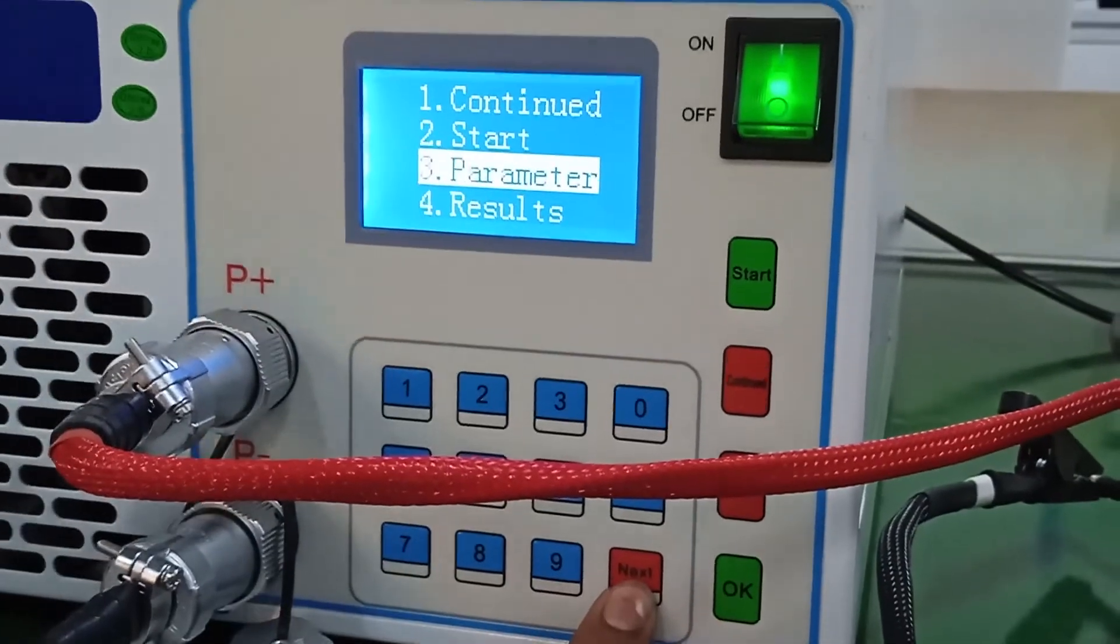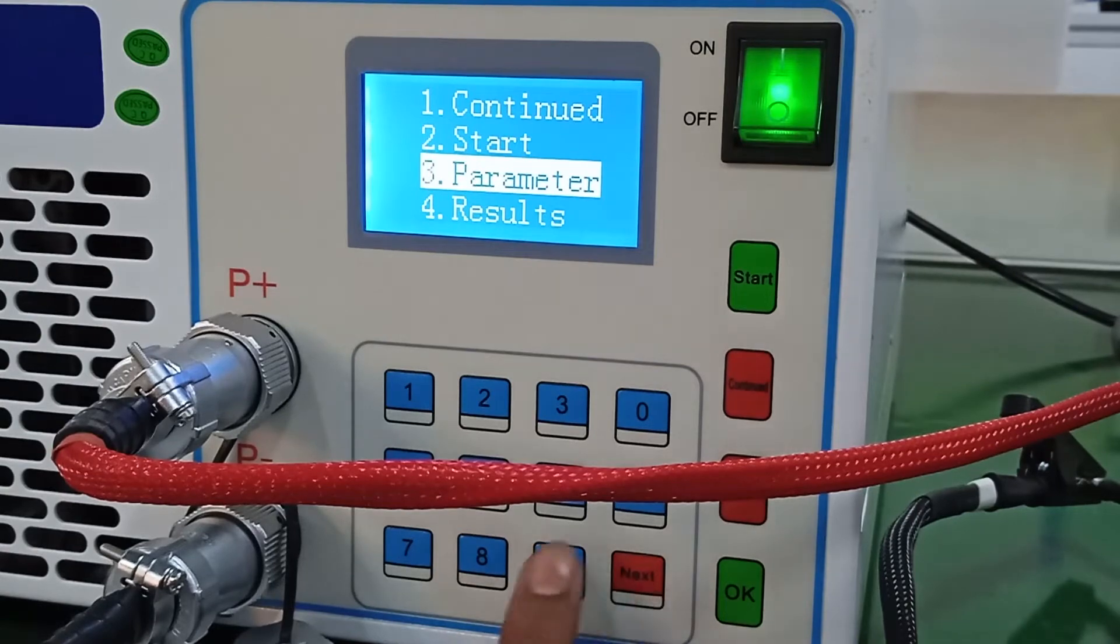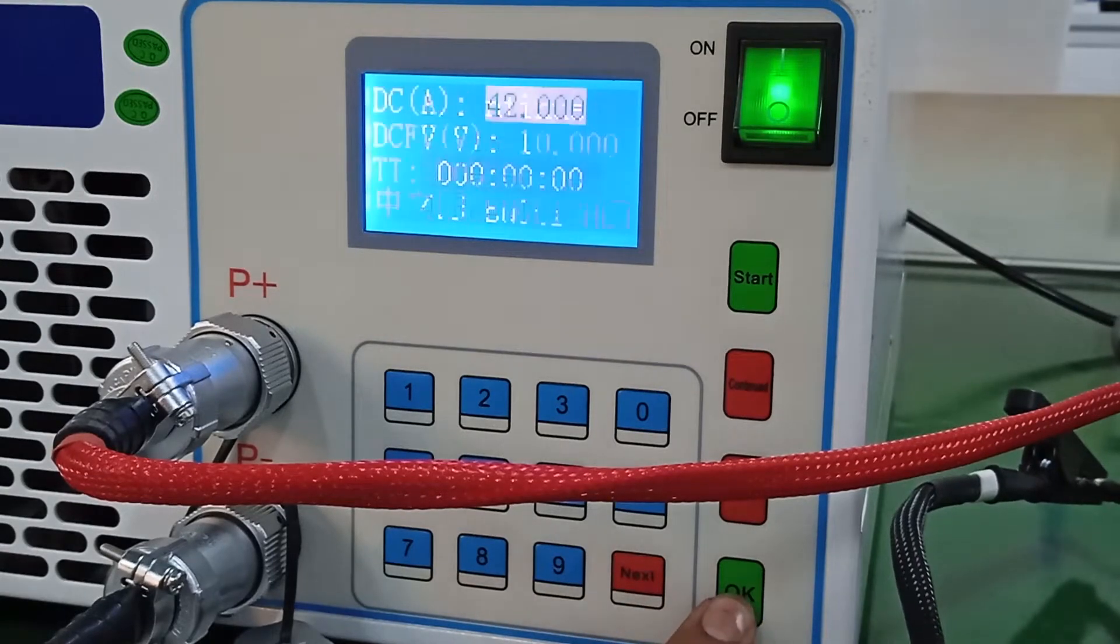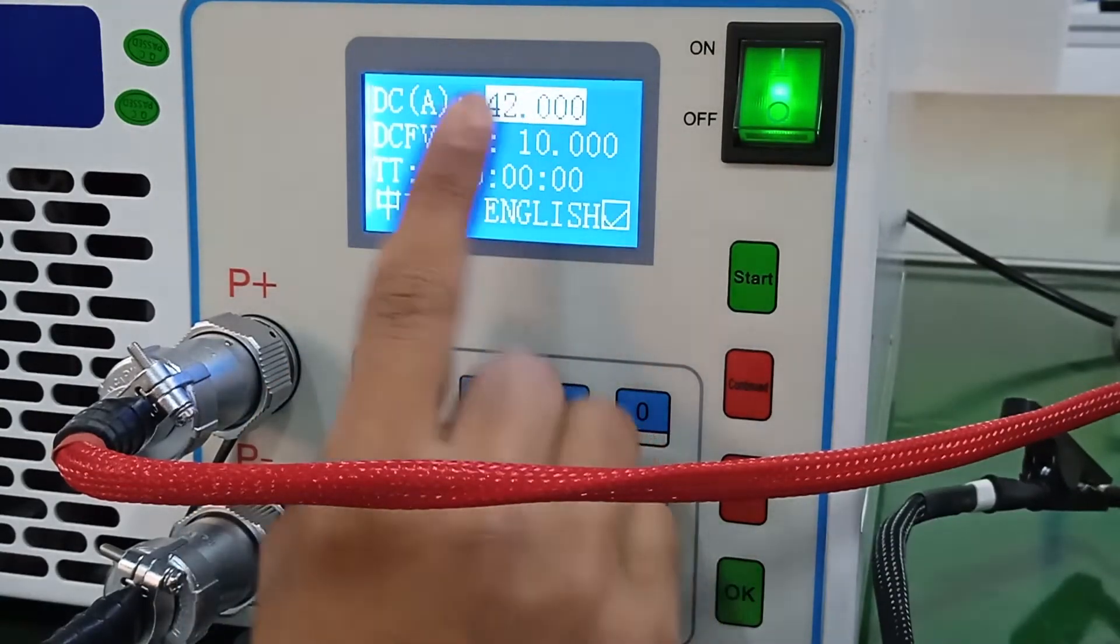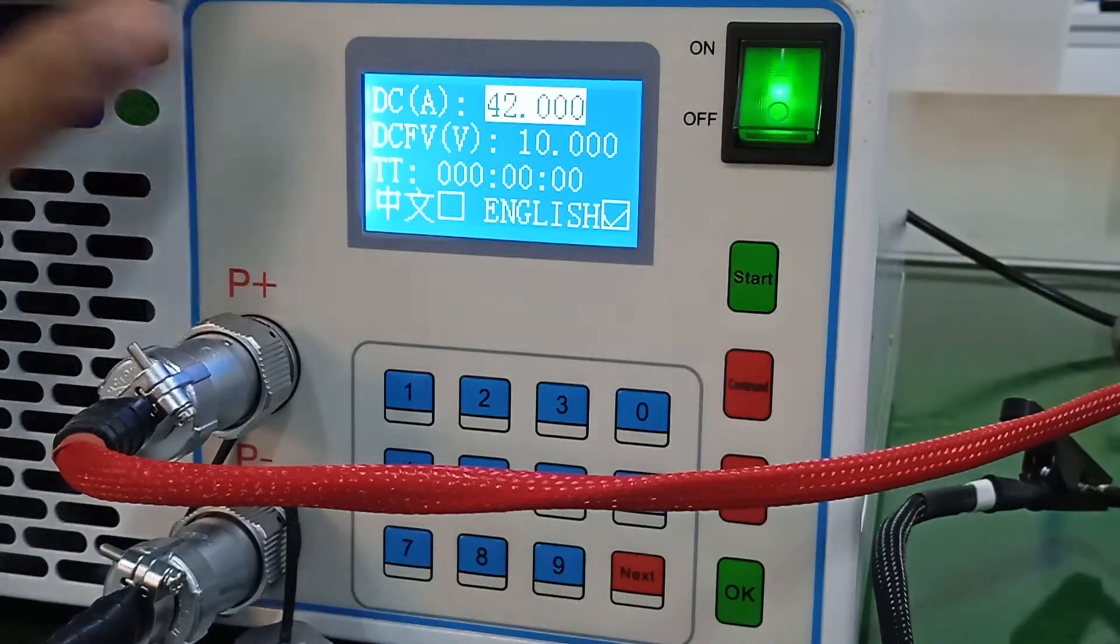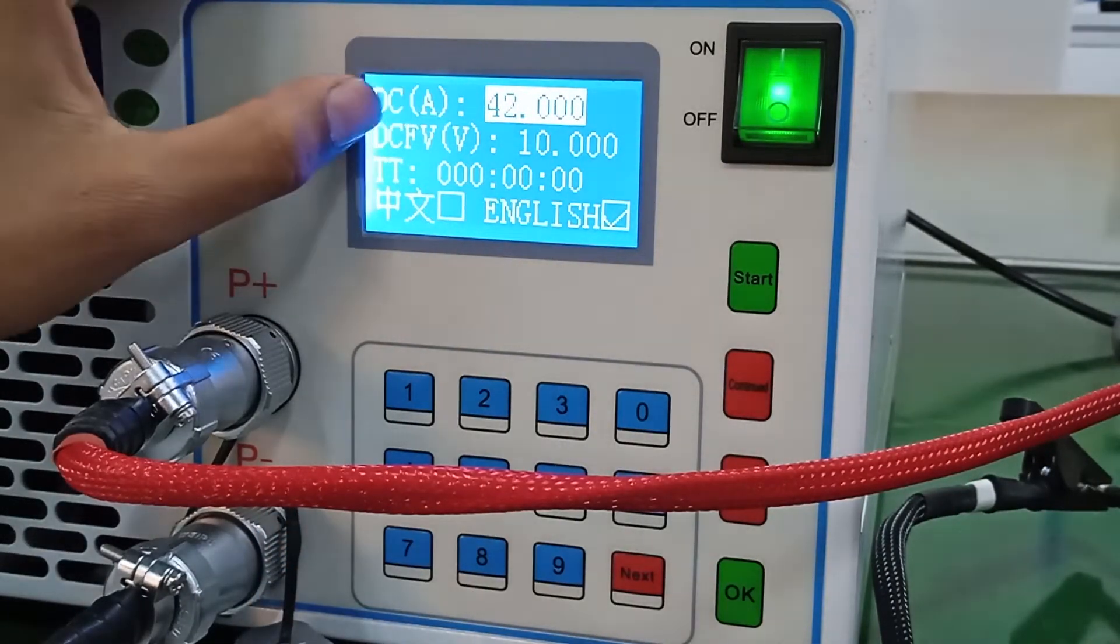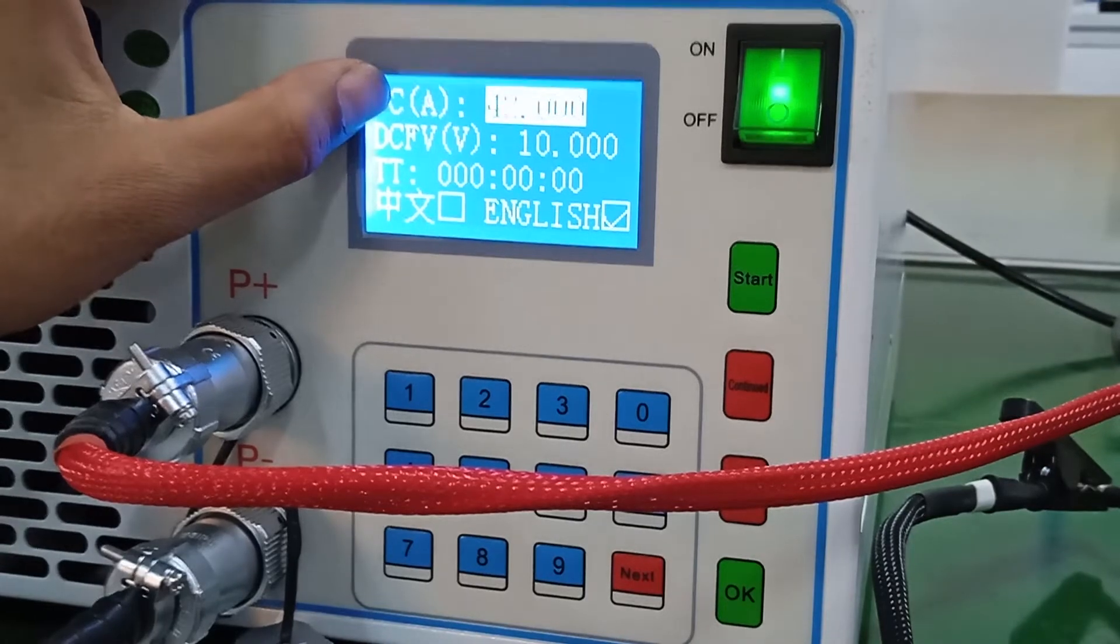Now, you can see the parameter setting is highlighted. Now, you have to click on OK. We will get this display. The display is very simple and very user-friendly interface. DCA means DC current. You have to set up your DC current.